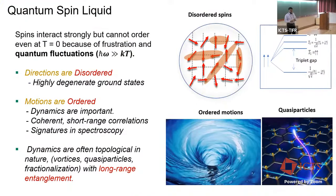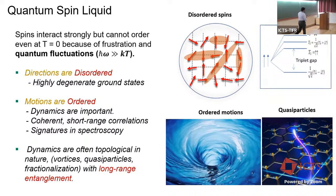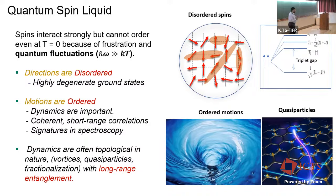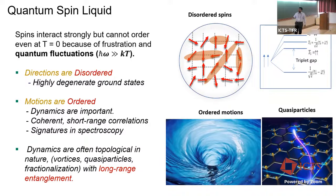A lot of introduction has been done on quantum spin liquids, but briefly — it's basically a state of matter where all the spins look disordered if you take a snapshot. However, the reason the spins are disordered is not because they are not interacting like in a paramagnet. The spins are actually very strongly interacting, but they still fail to order because of quantum fluctuations, giving rise to a highly degenerate ground state and rich dynamics.